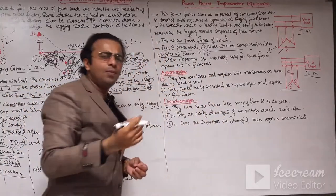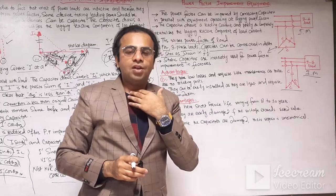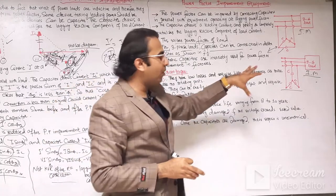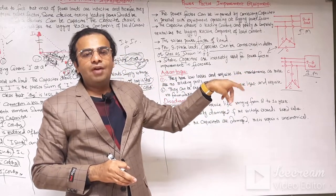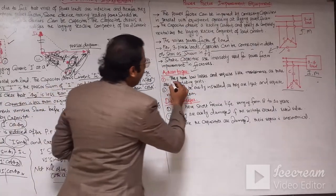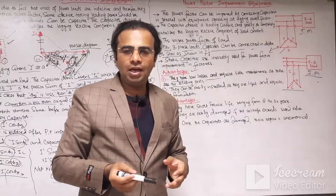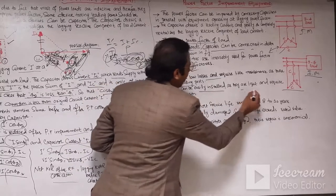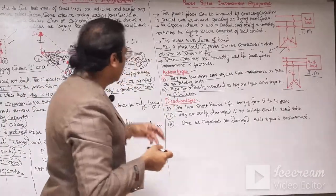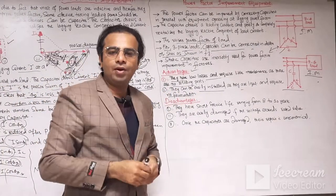Static capacitors are invariably used for power factor improvement of factories and industries. In factories we have three phase induction motors and heavy loads, so such capacitor banks are used for power factor improvement. The advantages of static capacitors are: they have low losses and require little maintenance as they have no rotating parts. They can be easily installed and are lightweight, requiring no foundation.